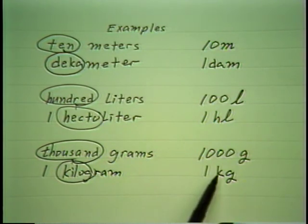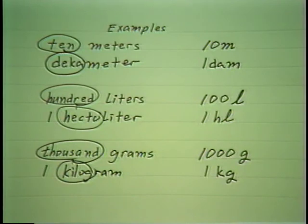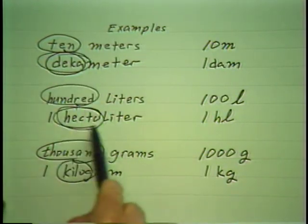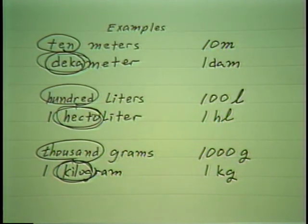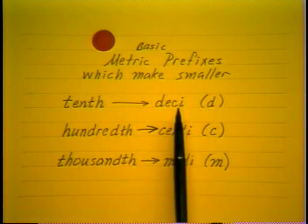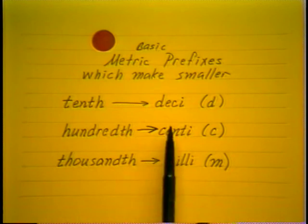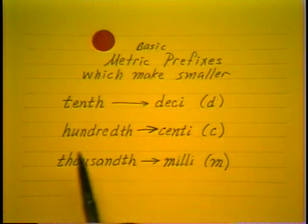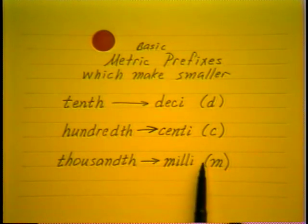And of course I could apply kilo not only to the gram, but to the liter or to the meter. So these prefixes are used on all units of measure, unlike the English system — a much simpler system once you're used to it. Now the three basic metric prefixes which make smaller: a tenth is the word deci, abbreviated D; a hundredth is the word centi, abbreviated C; and thousandth is the word milli, abbreviated M.